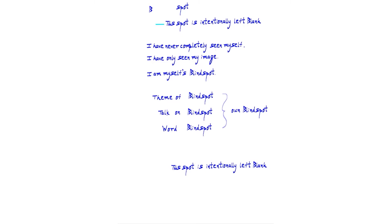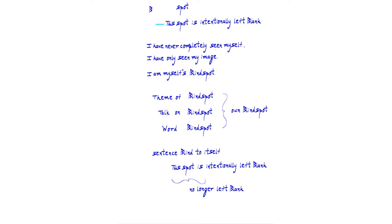So this talk is blind to itself. The emphasis is not to talk about it — we shall value not doing it. Let us again consider the sentence: this spot is intentionally left blank. The very expression of this no longer leaves this spot blank. This sentence is blind to itself.